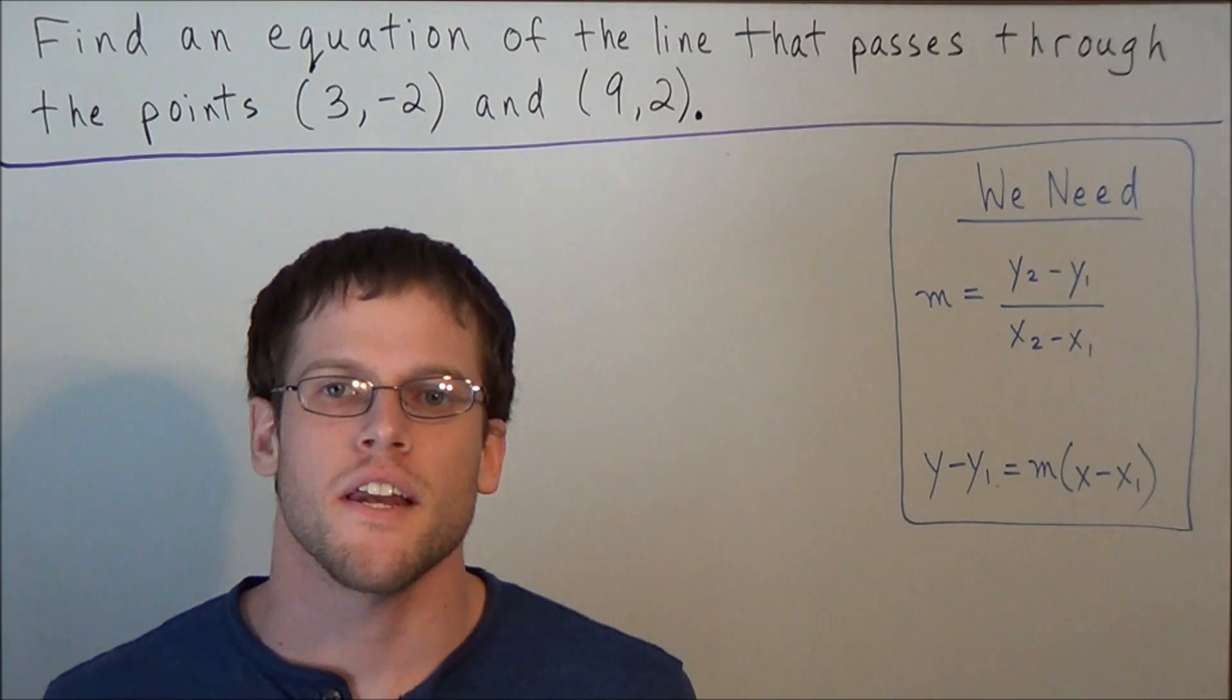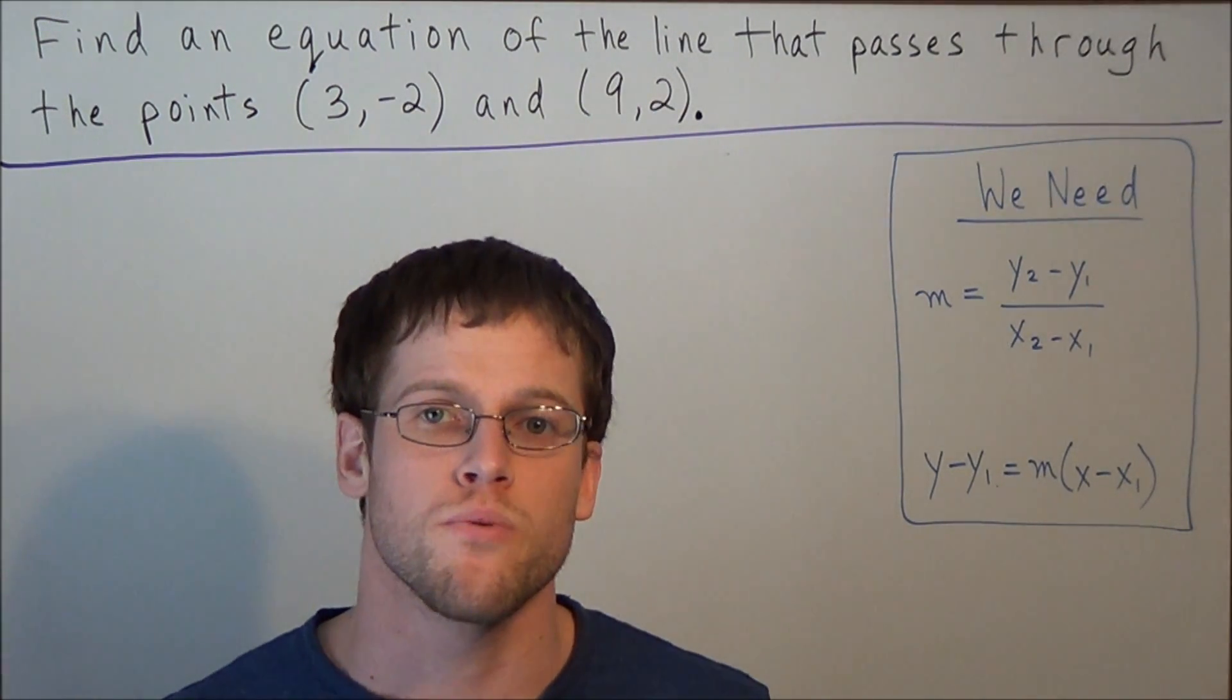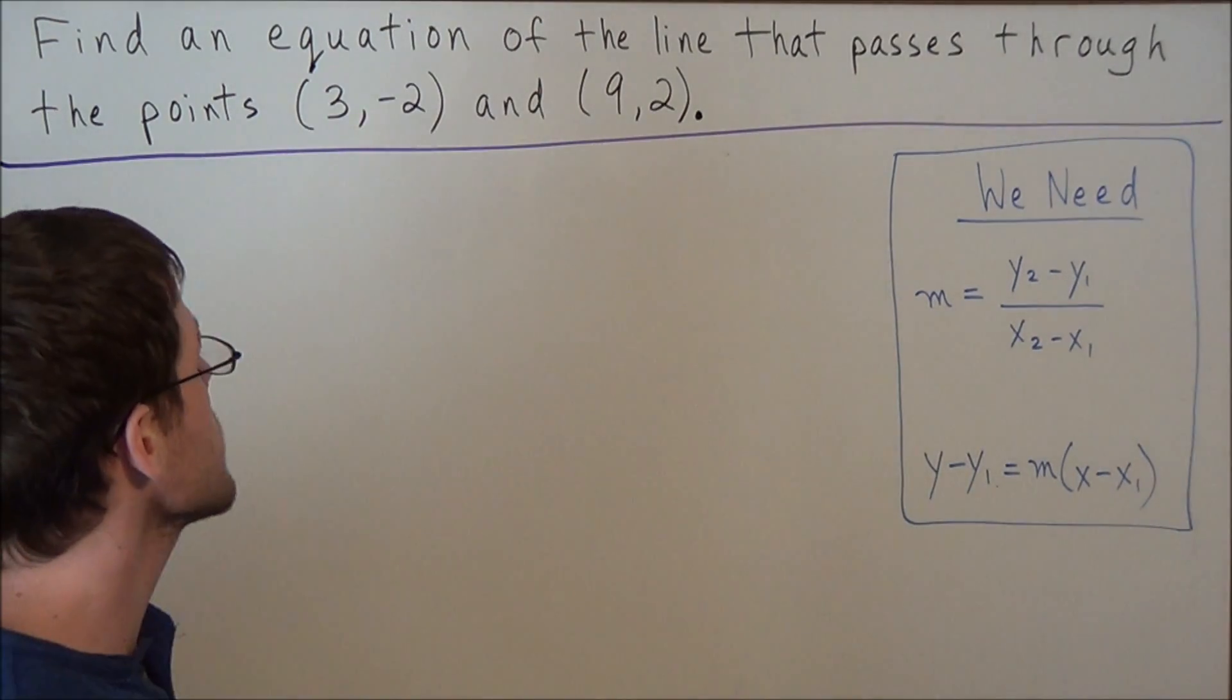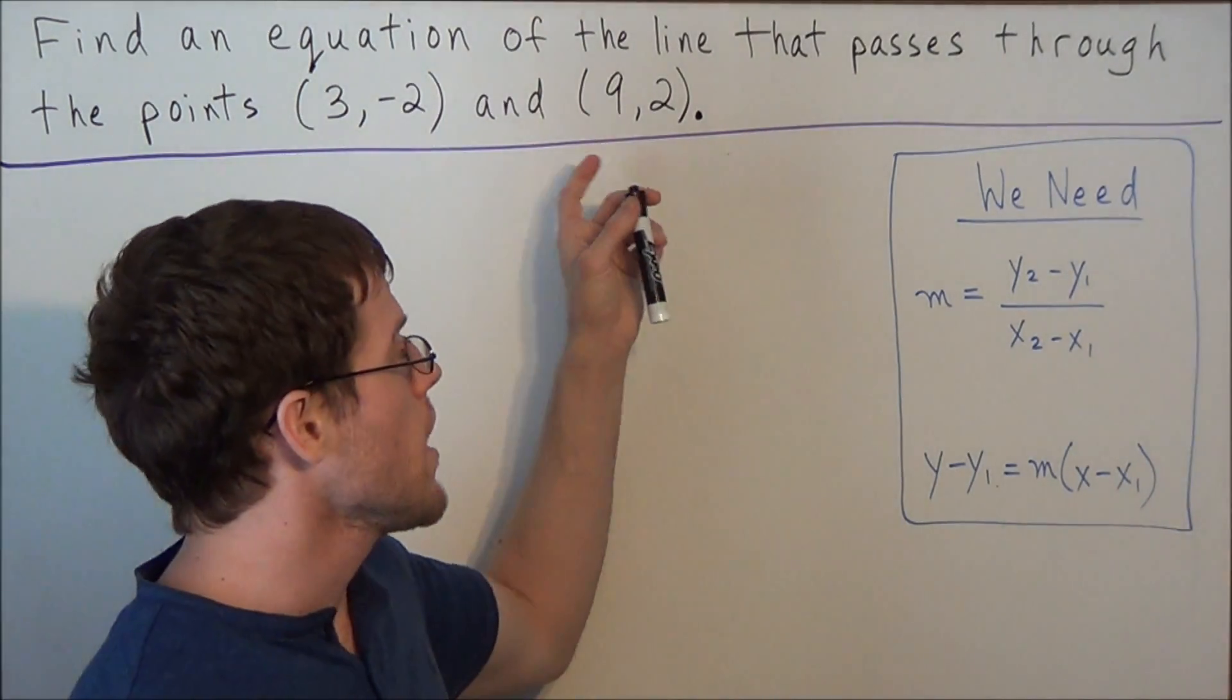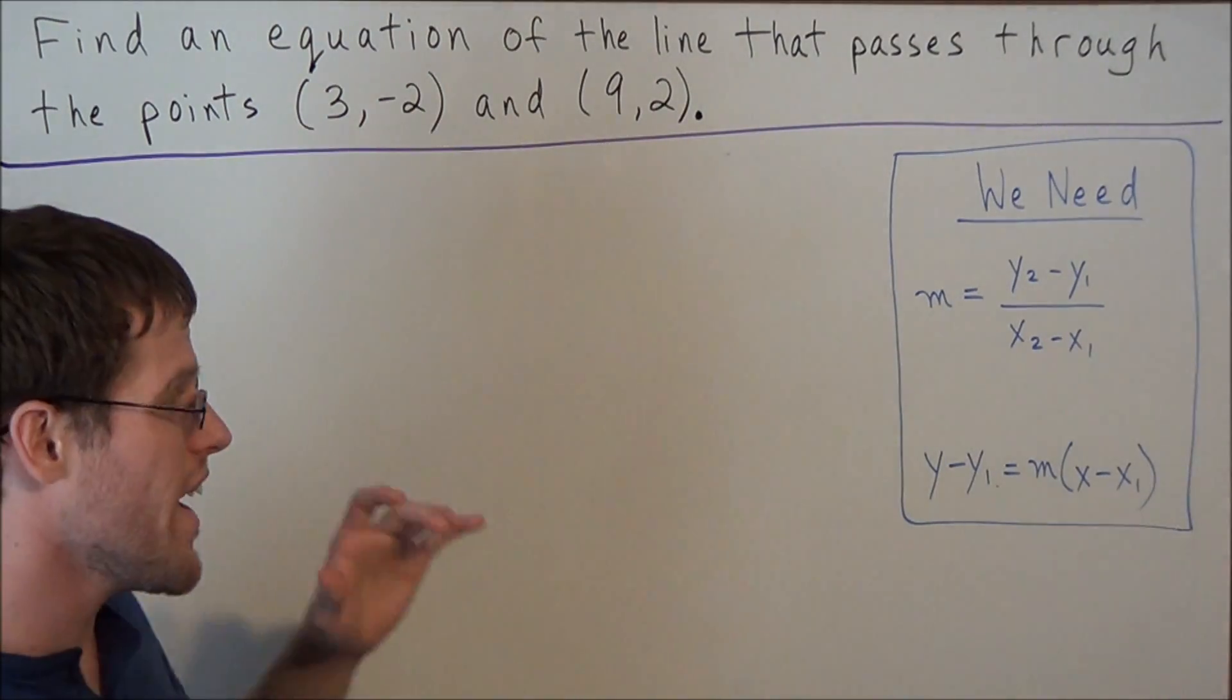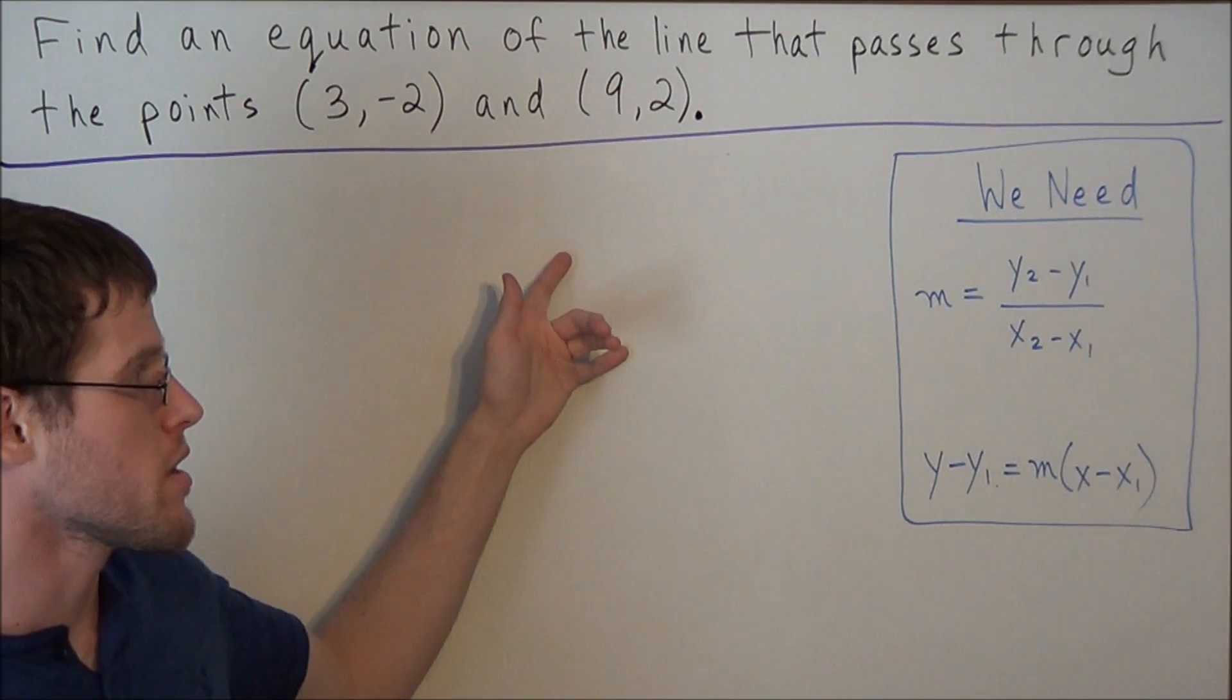Hi, my name is Mr. D and today I want to take a look at how to write the equation of a line that passes through two points. So we have find an equation of the line that passes through the points (3, -2) and (9, 2). So for any problem where we need to write the equation of a line, we need to find two things: we need a point and a slope, and then we can write the equation of the line.